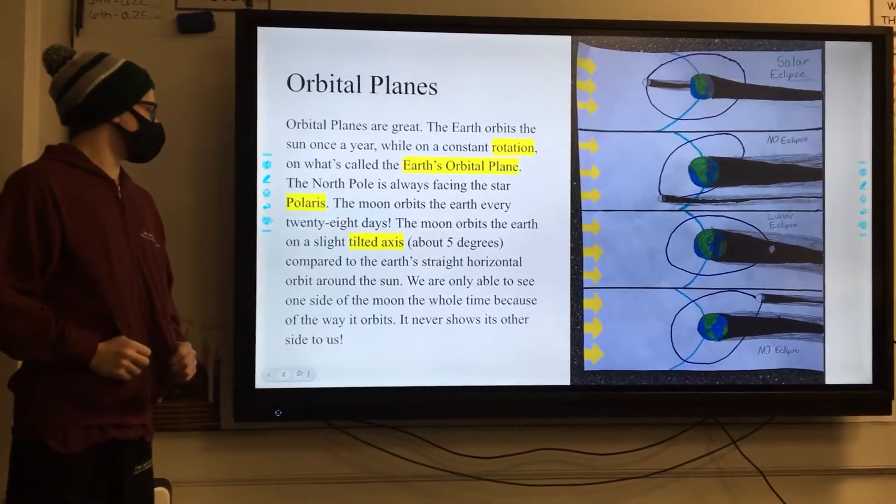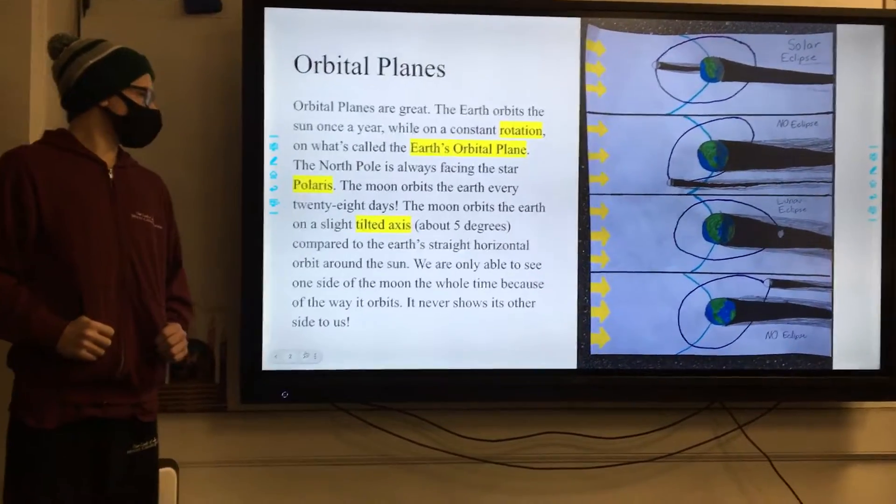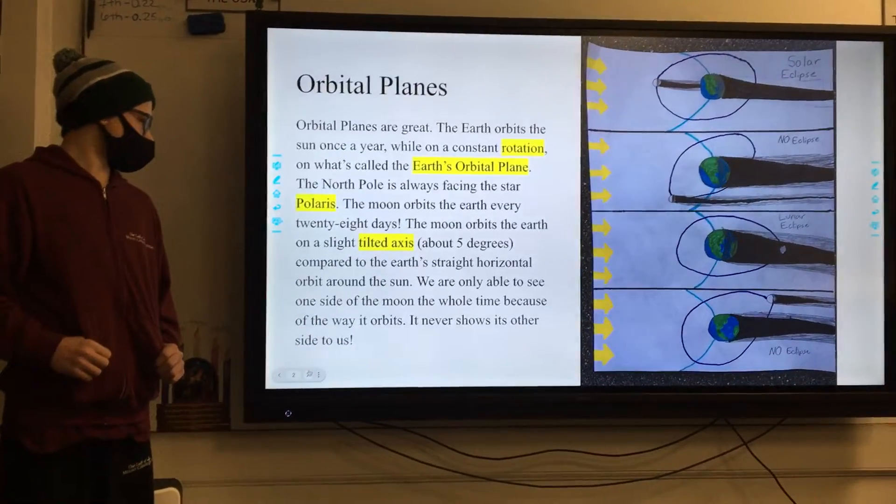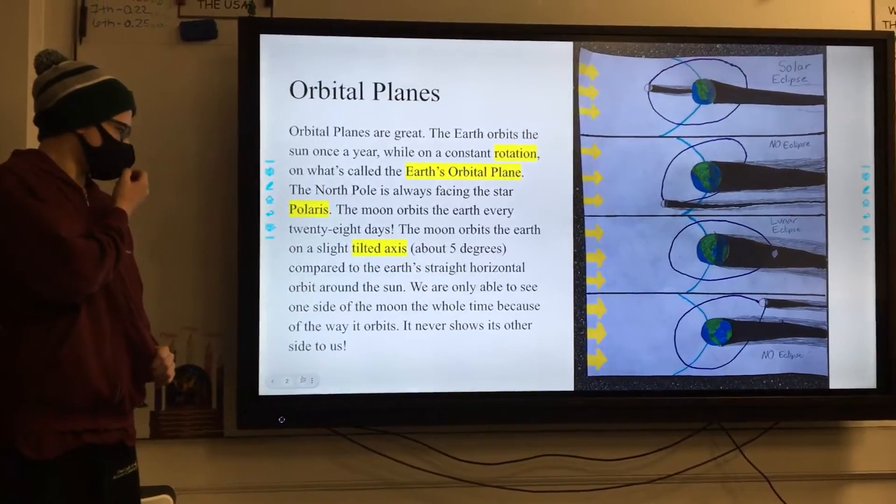The Moon orbits the Earth every 28 days. The Moon orbits the Earth on a slightly tilted axis, about 5 degrees, compared to the Earth's straight horizontal orbit around the Sun.